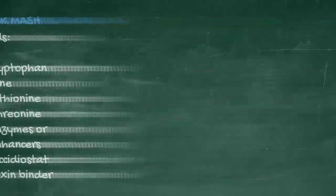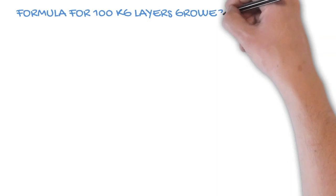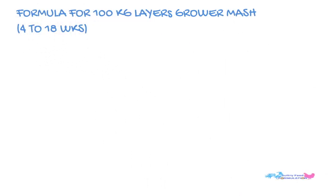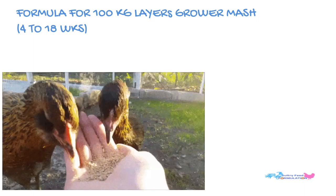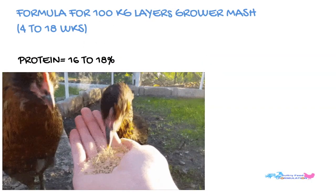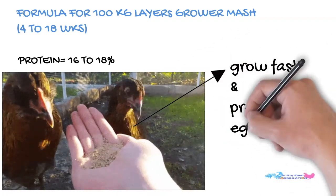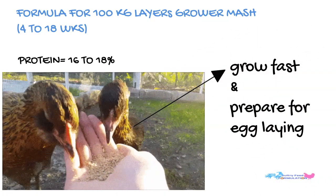Formula for 100 kg of layers grower mash, 4-18 weeks. It is very necessary that pullets should be provided with a feed having a protein content of between 16 and 18%. Such feed makes the pullet grow fast and prepare for egg laying.